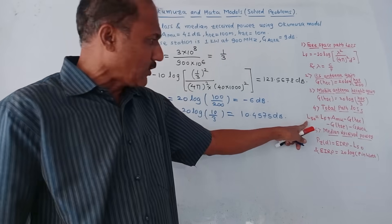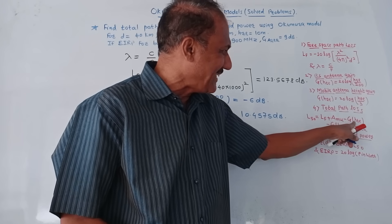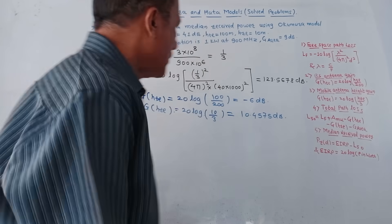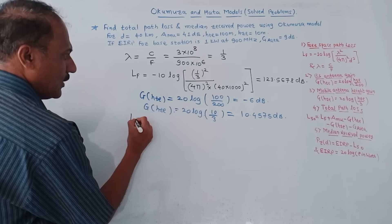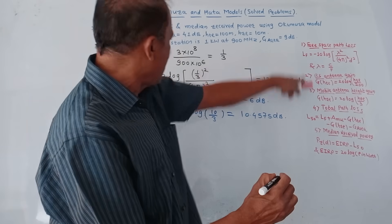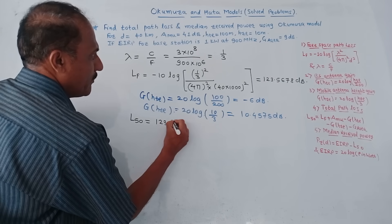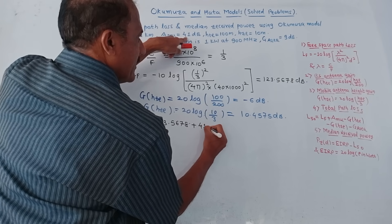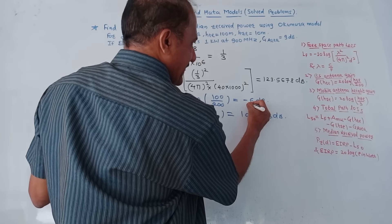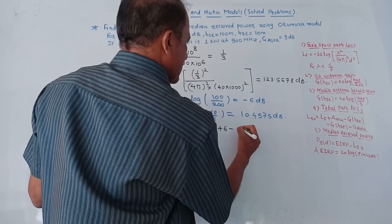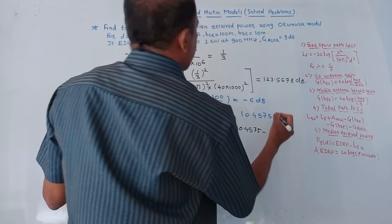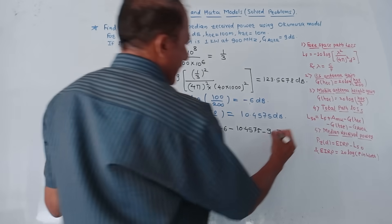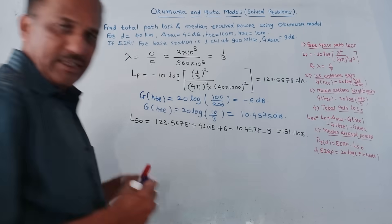Now we calculate total path loss using: L50 = LF + AMU − G(HTA) − G(HRE) − G_area. Substituting: L50 = 123.5678 + 41 − (−6) − 10.4575 − 9 = 151.1103 dB. This is the answer for L50.